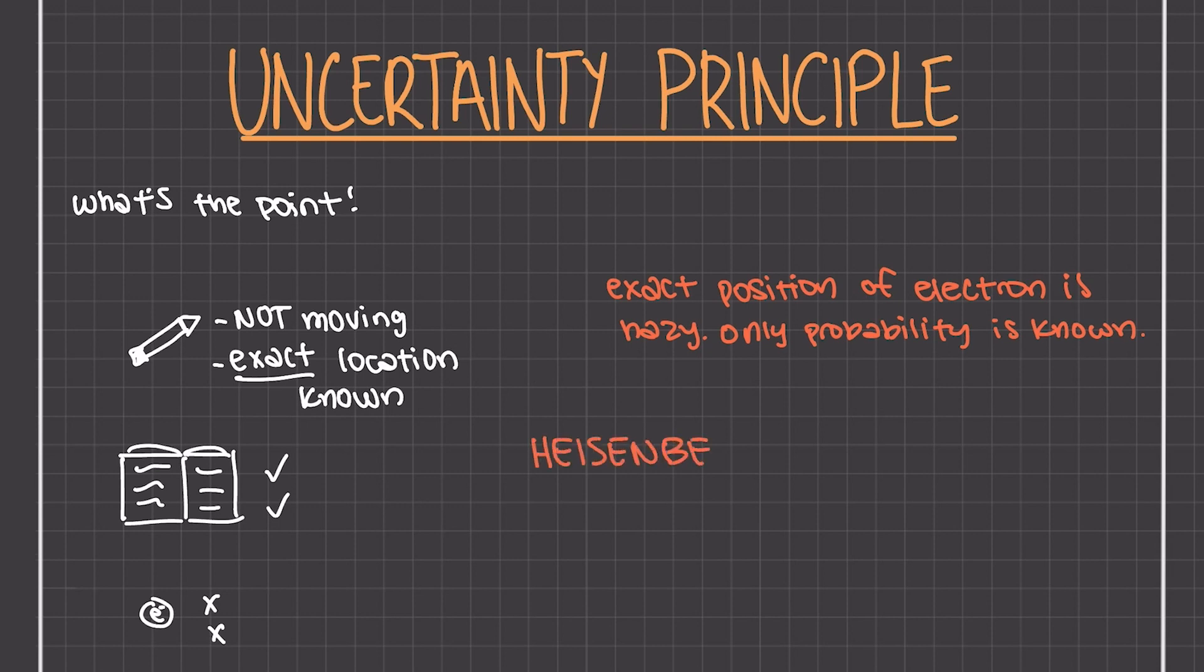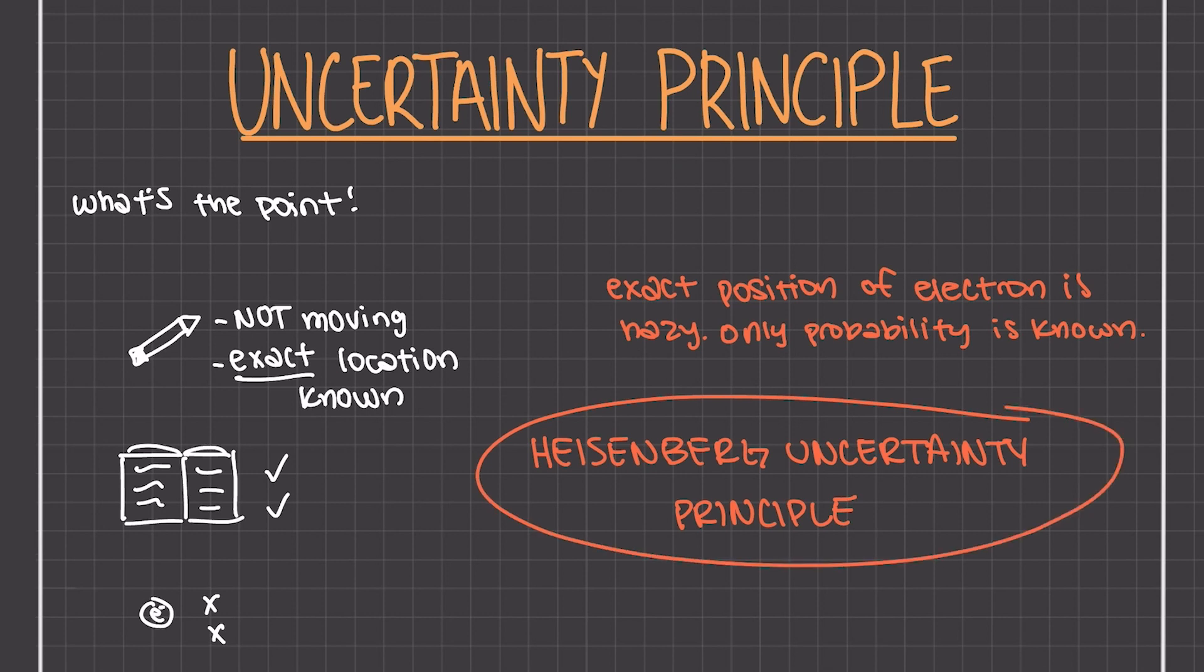This is the Heisenberg uncertainty principle, which tells us that the accuracy with which we can determine the position and velocity of a particle is inherently limited. We can only know the probability that the electron will be in a certain region of space.